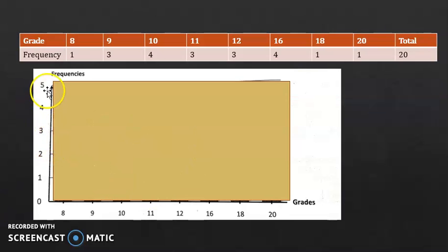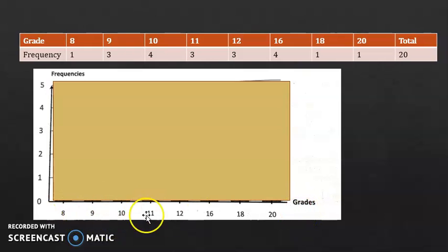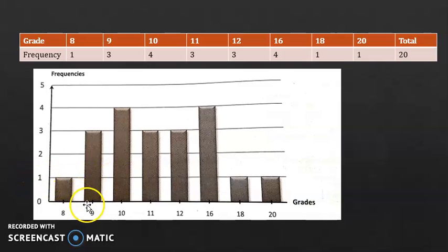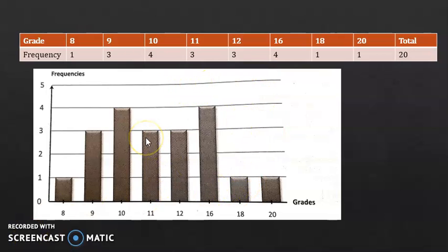So now I'm hiding the bars and showing just the axes. The frequency on the y-axis is 1 unit for a frequency of 1, while on the x-axis we only place the grades in increasing order. Notice here we're jumping from 11 to 12, then from 12 to 16. Now you draw the bars — choose any width you want, with all bars the same width and equal spacing between them. The length of each bar reflects its frequency: for grade 8, frequency is 1, so it hits the line at 1; for grade 9, frequency is 3; for grade 10, frequency is 4, and so on. You're not forced to draw horizontal lines — they're just helpful guides.